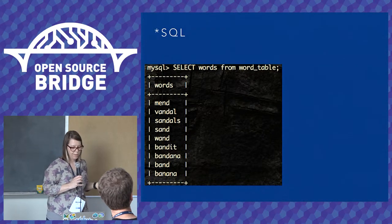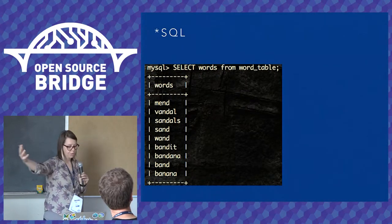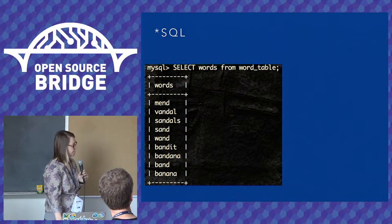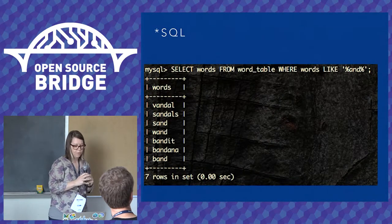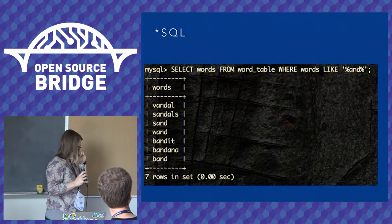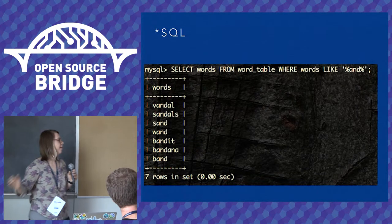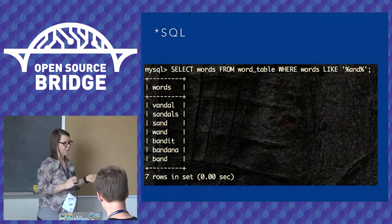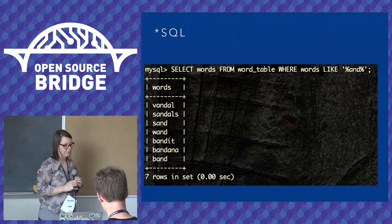So I have a table of about nine words, some of which contain the search string 'and'. If we had an entire dictionary's worth of words and we wanted to search for a substring — anything that contained 'and' — this would get pretty expensive over time. Out of nine instances of words in my database, I searched using the wildcard and got seven results back. That's a pretty big percentage of returns, and if I had a dictionary's worth of words, that would take a very, very long time.